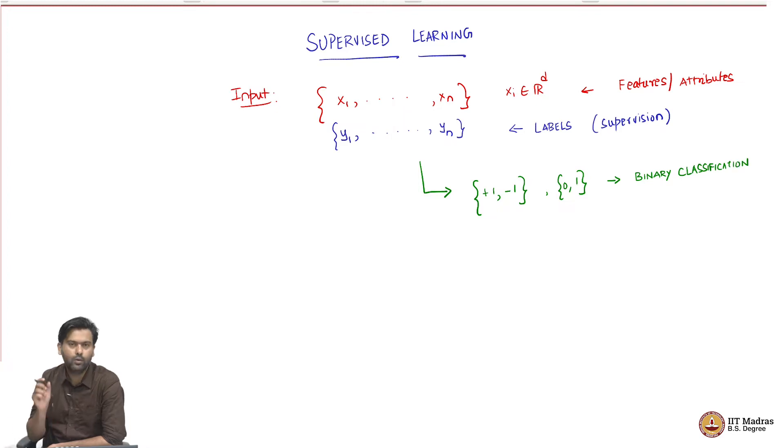Why? Because there are two labels, the labels can take only two values, hence the term binary. And given a new feature, which you were perhaps not seen in your data set, you would want to predict whether the label is plus 1 or minus 1. So you want to classify the feature as falling in the plus 1 bucket or the minus 1 bucket. So hence it is called as a classification problem. Because there are only two labels, we call it binary classification.